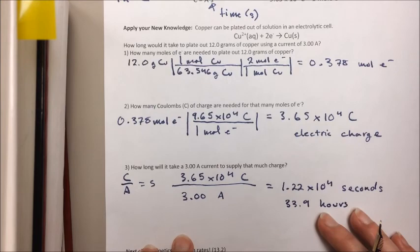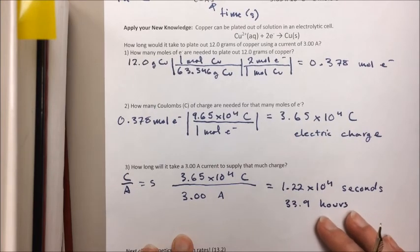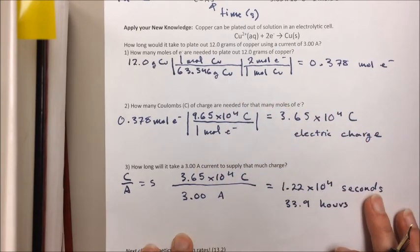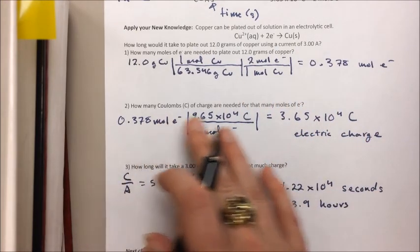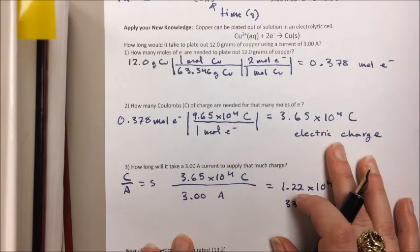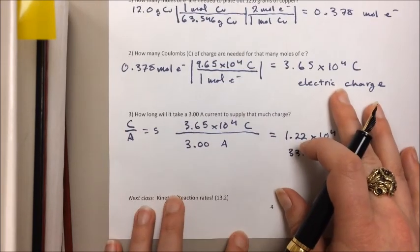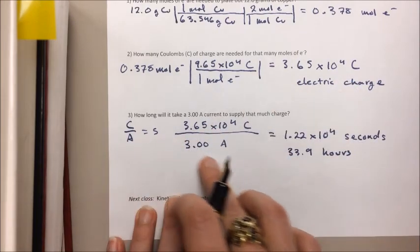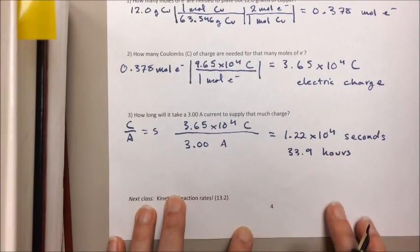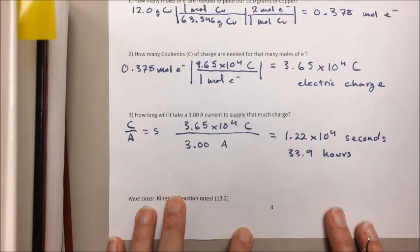So remember, when you're doing a plating out problem, start first by figuring out how many moles of electrons you need just using stoichiometry. Convert the moles of electrons to the amount of electric charge that will deliver those electrons. And then use the charge to figure out, based on the amperage, how long it will take to deliver that charge using that particular electric current. See you guys on Monday.